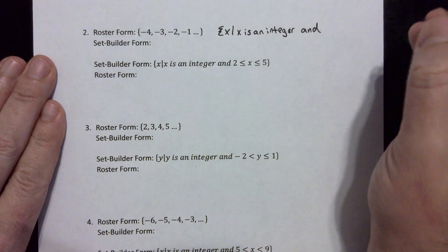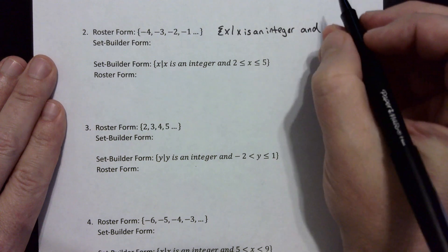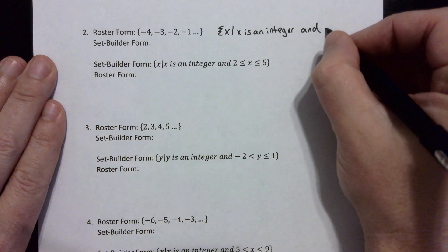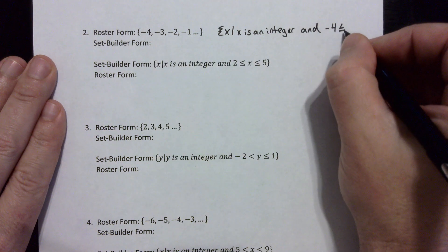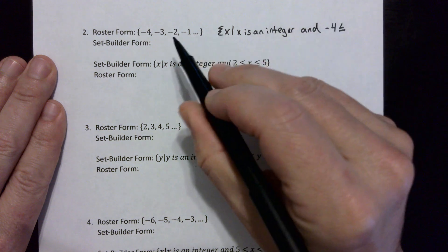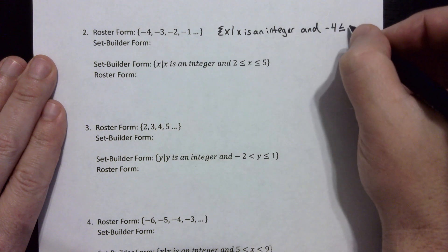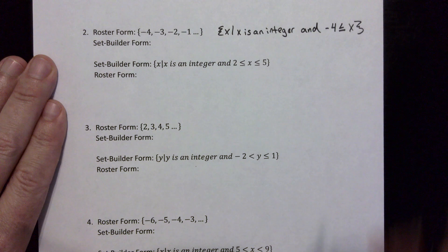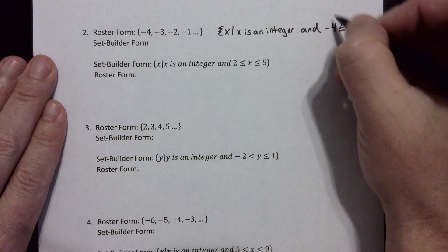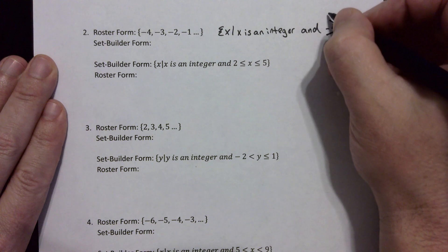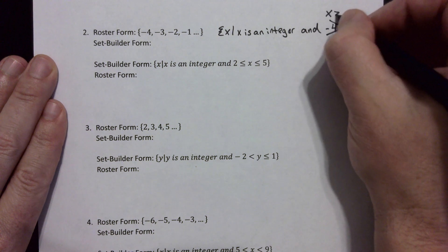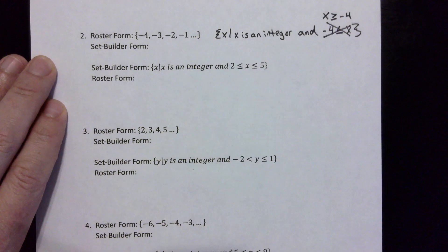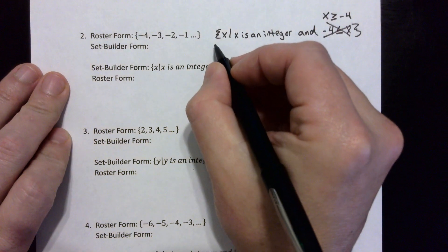The first way includes the endpoint, so I'll write negative four is less than or equal to x — the equal-to sign means I'm including negative four, which is what we want — and then no upper bound. You could also write this as x is greater than or equal to negative four, though usually you want the variable first. Both are correct.